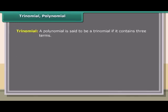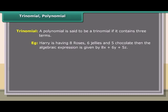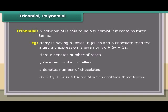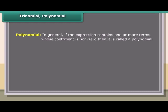Trinomial: A polynomial with three terms. Example: Harry has 8 roses, 6 jellies, and 5 chocolates. The algebraic expression is 8x + 6y + 5z, where x = roses, y = jellies, z = chocolates. 8x + 6y + 5z is a trinomial. Polynomial: In general, if an expression contains one or more terms whose coefficient is non-zero, it is called a polynomial. Example: 4x + 4xy + 17xz² − 10y²z + 19.